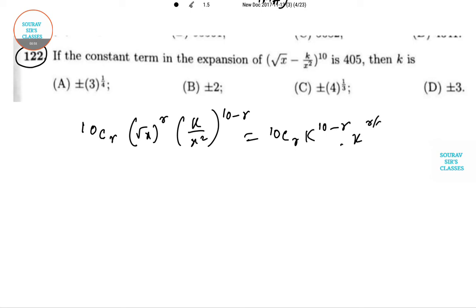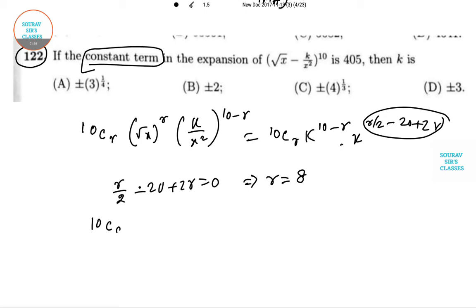By 2 minus 20 plus 2R. Now this term is independent of X as it's a constant term, so this value has to be 0. So R/2 minus 20 plus 2R equals 0, which gives R equals 8.